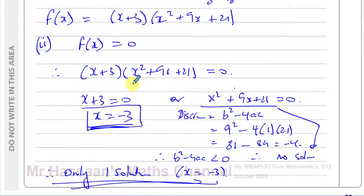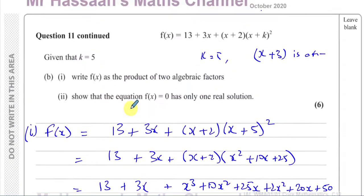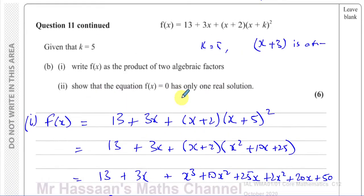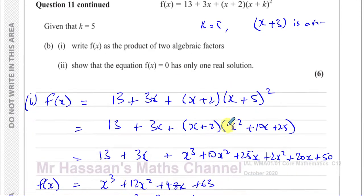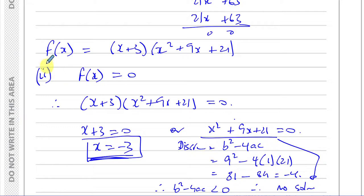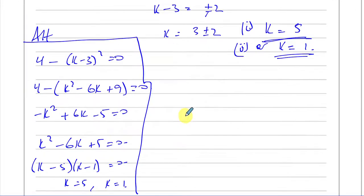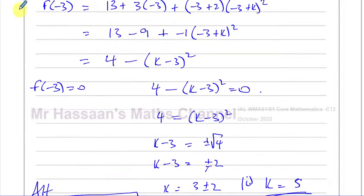That means this curve will only cross the x-axis at x equals negative 3. So that's the answer to question 11, part B parts 1 and 2 — using algebraic long division, the discriminant, and the factor theorem.